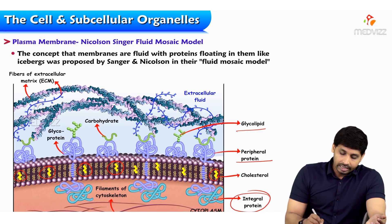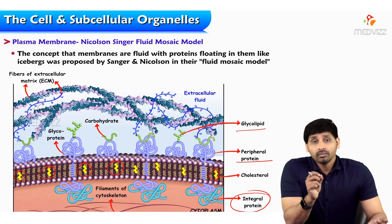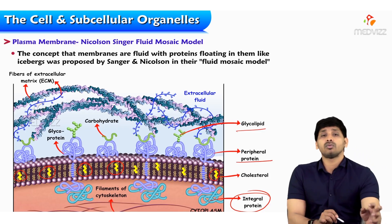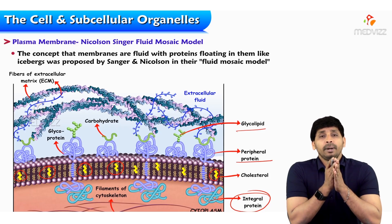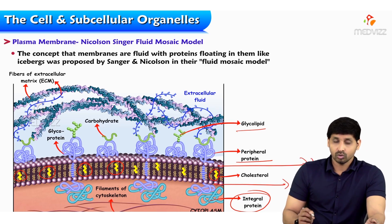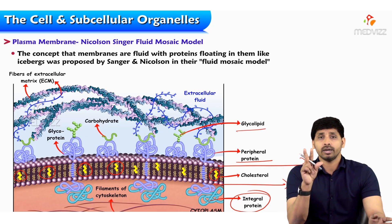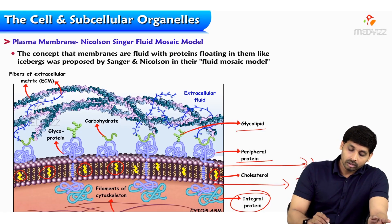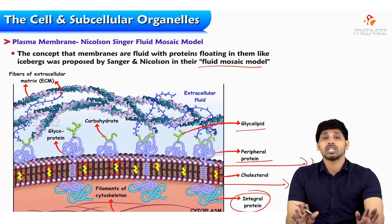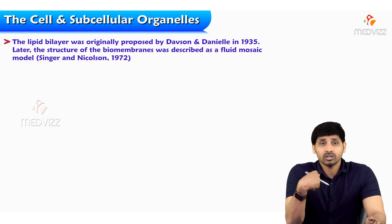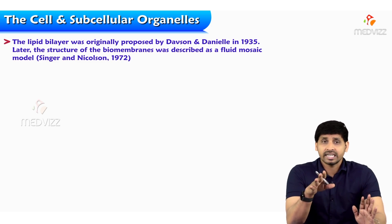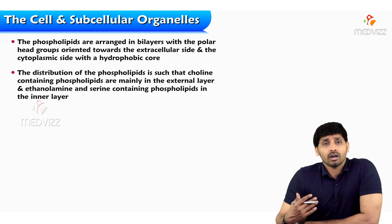The popular theory to explain the cell membrane is the Singer and Nicolson model — a lipid bilayer with two layers. They proposed the fluid mosaic model, and this fluidity is mainly due to the amount of cholesterol in the cell membrane. The lipid bilayer was originally proposed by Davson and Danielli, and later the biomembrane structure was explained with the help of the fluid mosaic model by Singer and Nicolson.